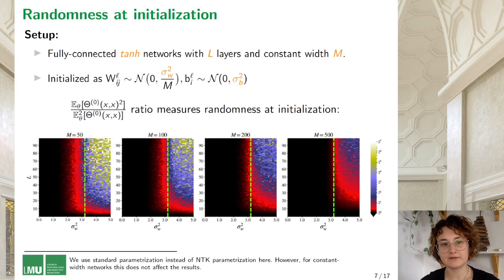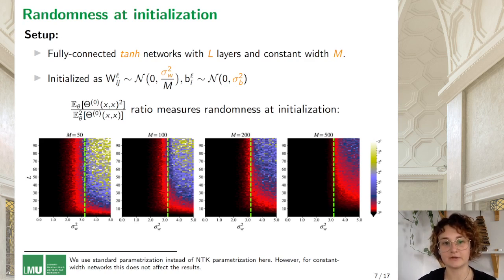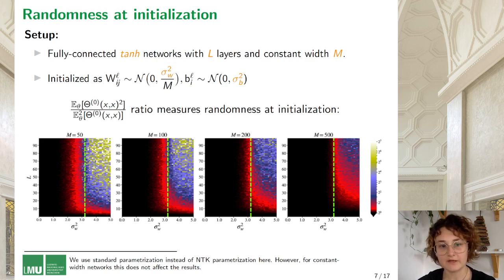The first implication of NTK theory states that the NTK is deterministic at initialization. Here we study randomness of NTK at initialization as a function of our hyperparameters: depth L, width M, and initialization hyperparameters sigma_W and sigma_B. To do so, we consider the ratio of the second moment of elements of the empirical NTK to their squared expectation. In the graphs shown for sigmoid networks, the black area indicates the ratio is close to 1, meaning the NTK is close to deterministic. For smaller values of sigma_W, networks of any depth have deterministic NTK; for larger values of sigma_W, only shallow networks have deterministic NTK.